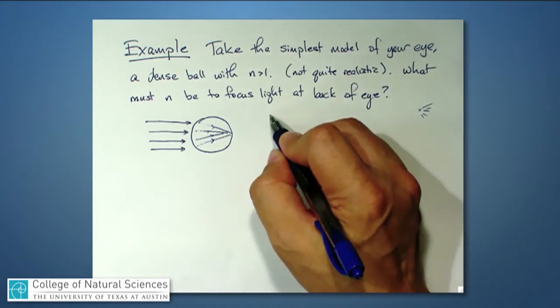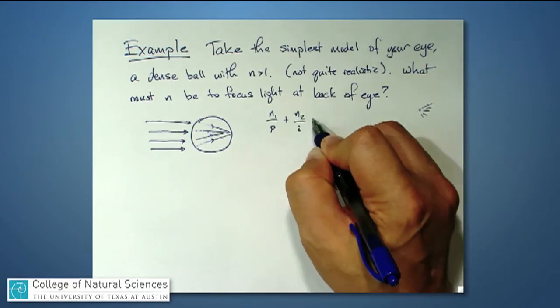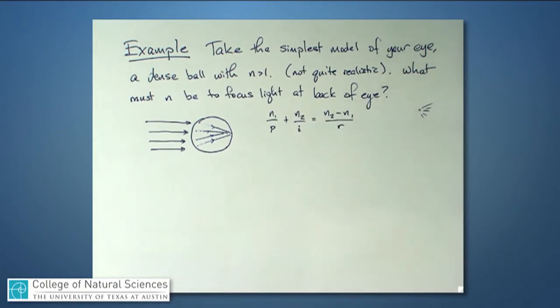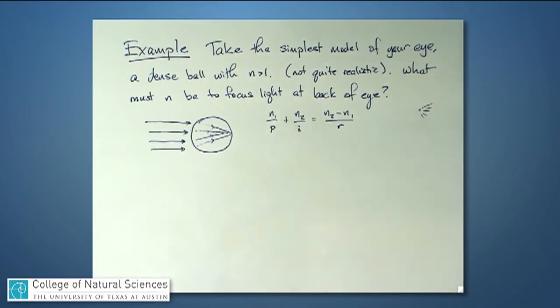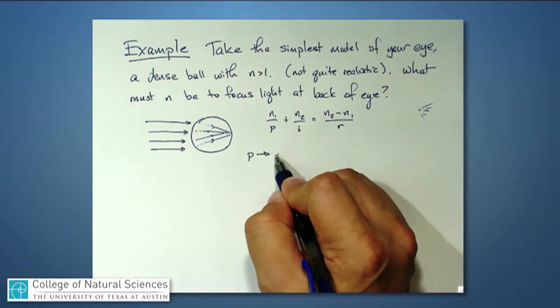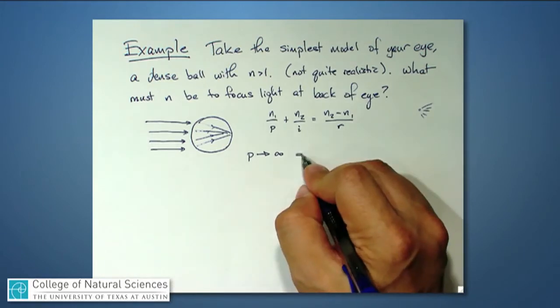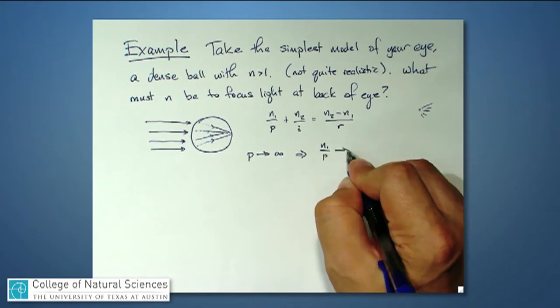So in our expression, where we say that N1 over P plus N2 over I equals N2 minus N1 over R, this term right here, this ratio N1 over P will go to zero, because if P is going to infinity, the object is infinitely far away off to the left, that means that N1 over P is going to zero.